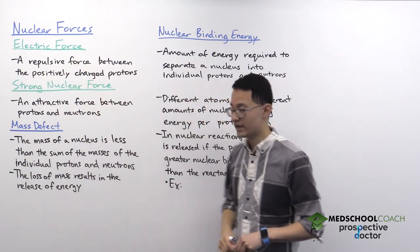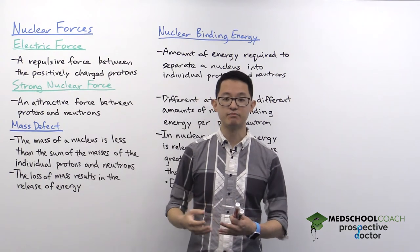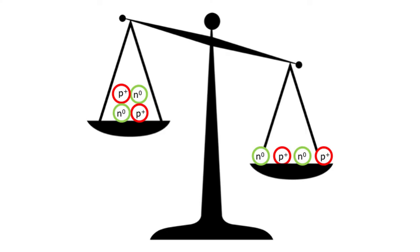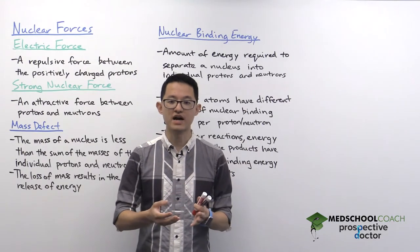Now let's talk about the mass defect, which is best illustrated with a diagram. On one side of the scale, we have four individual nucleons — two protons and two neutrons. On the other side, we have the same four nucleons fused together to form a helium nucleus. What's very interesting is that the mass of the nucleus is less than the sum of the masses of the individual nucleons, meaning when you form a nucleus, you lose mass.